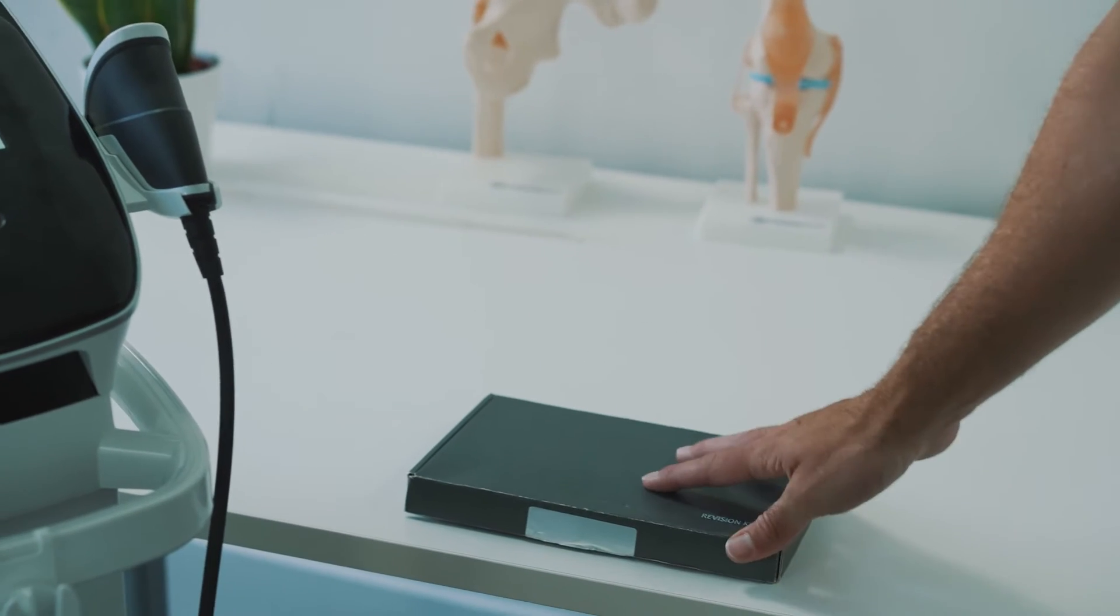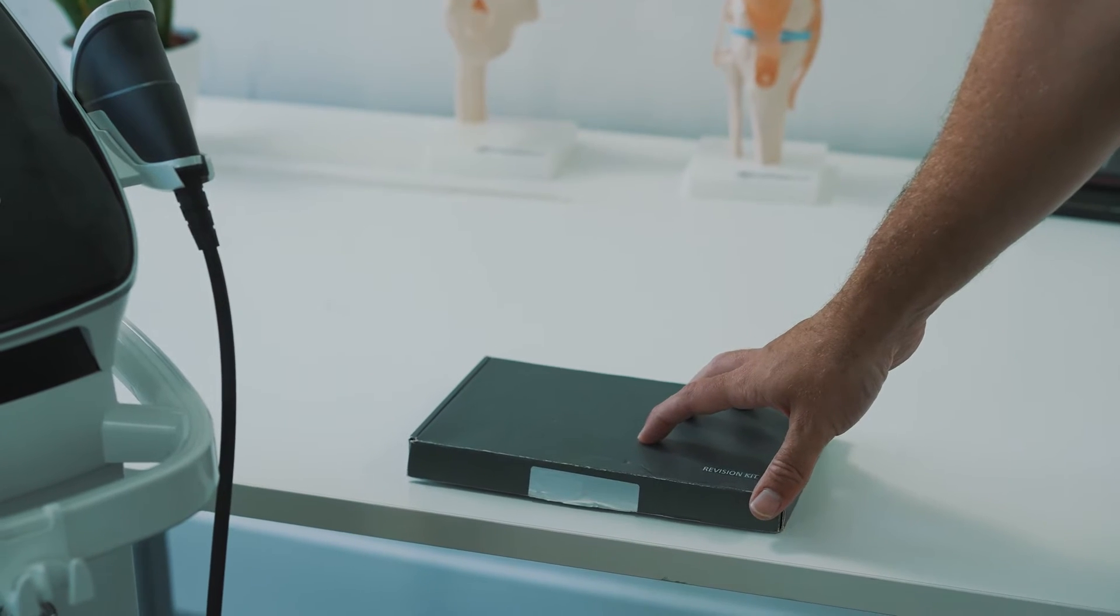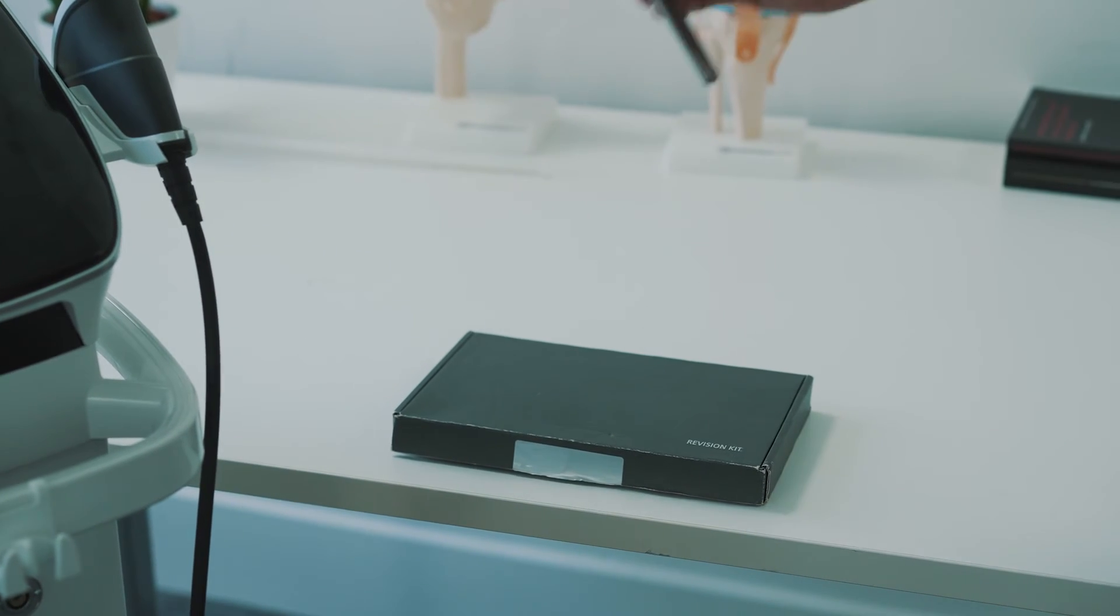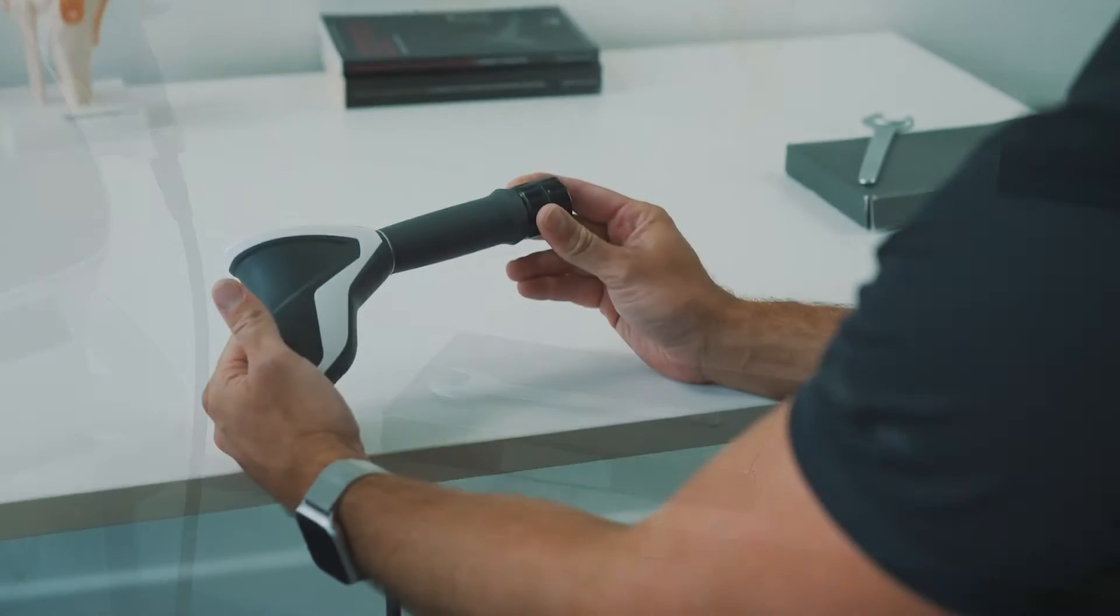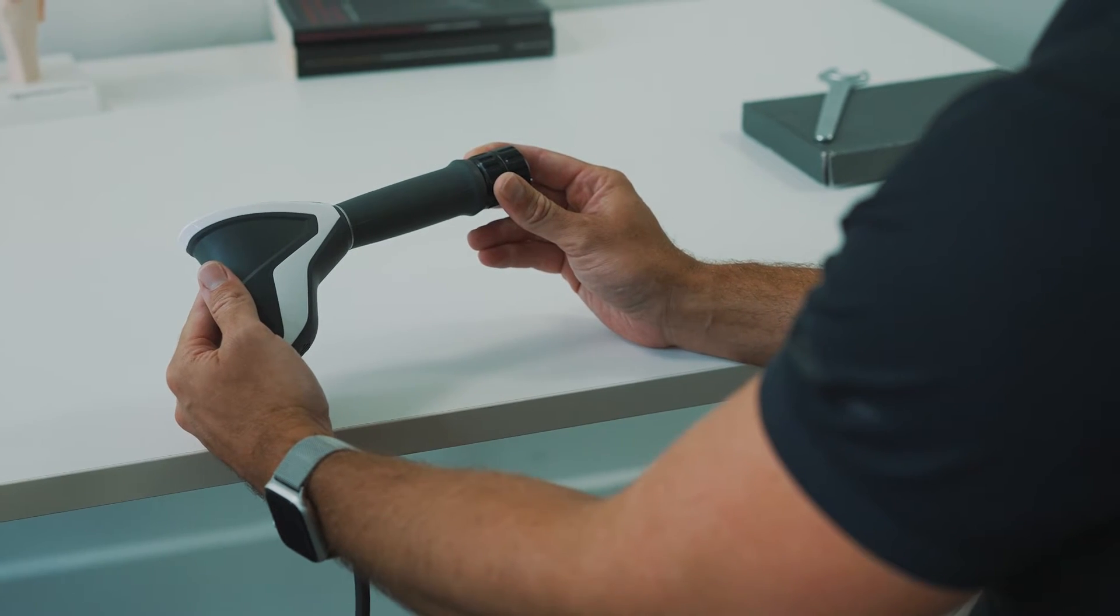You'll need a revision kit which can be purchased from the link in the description and the spanner provided with the Intellect RPW2. The first thing to do is ensure that the device is switched off.